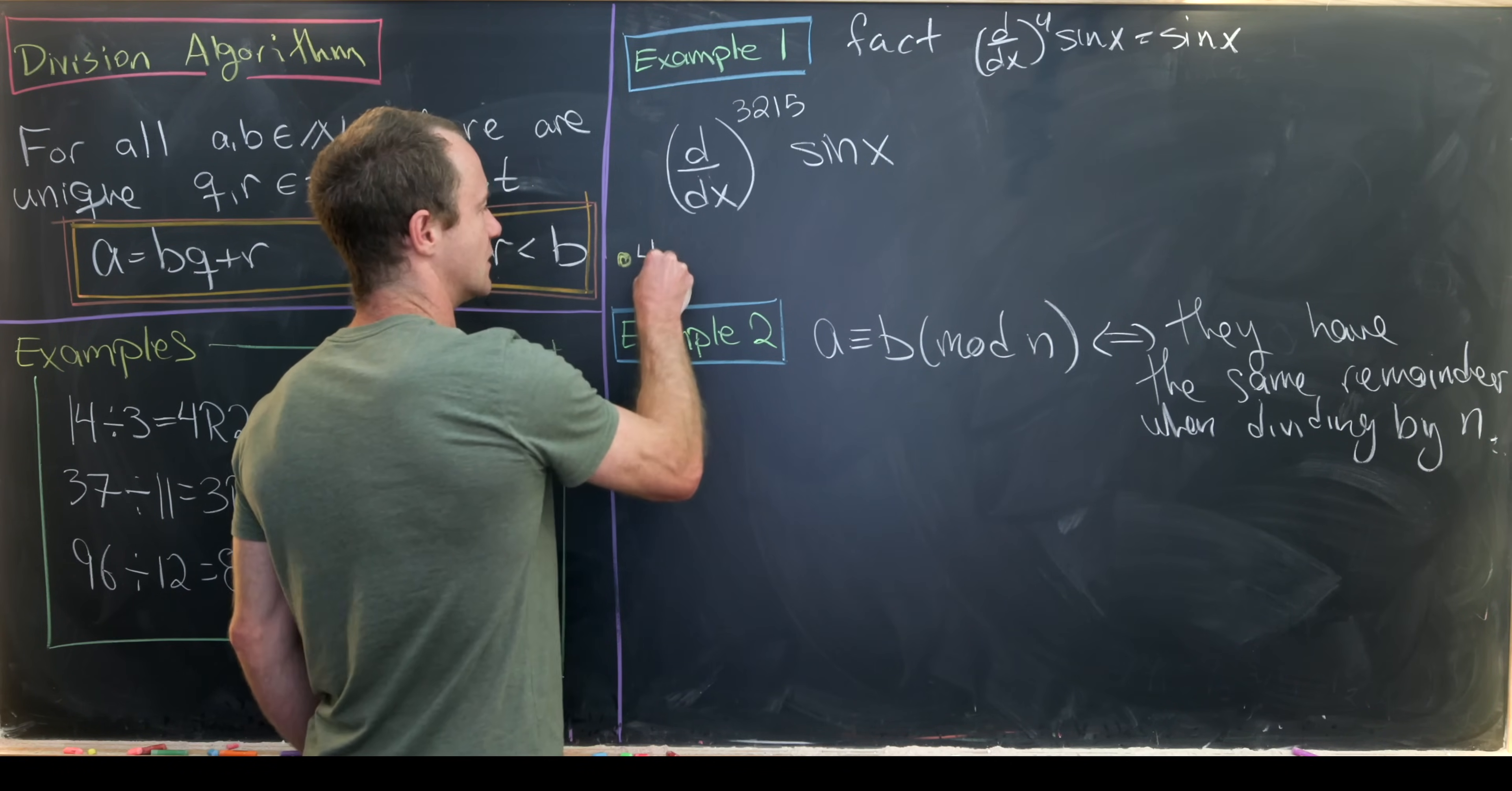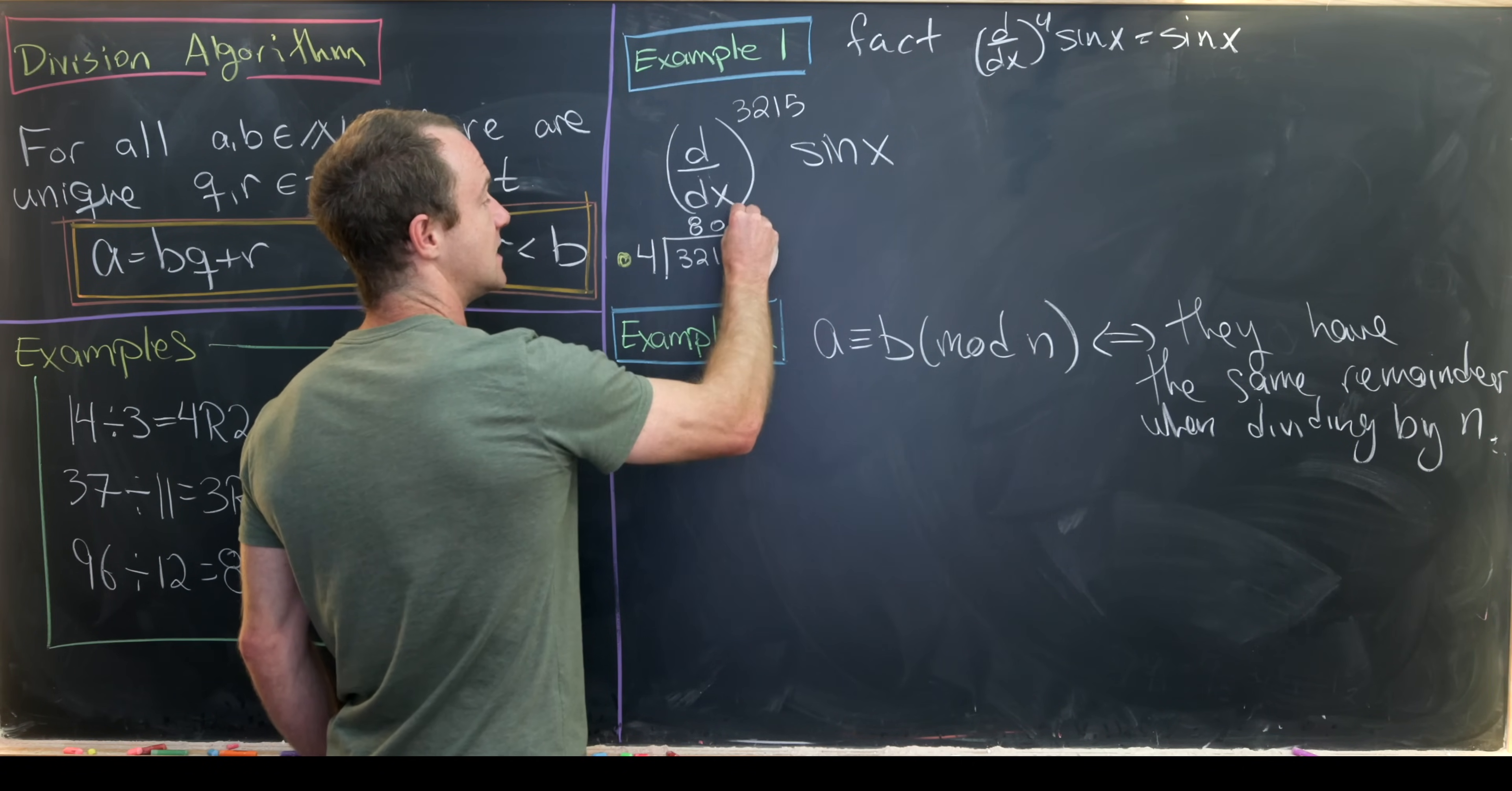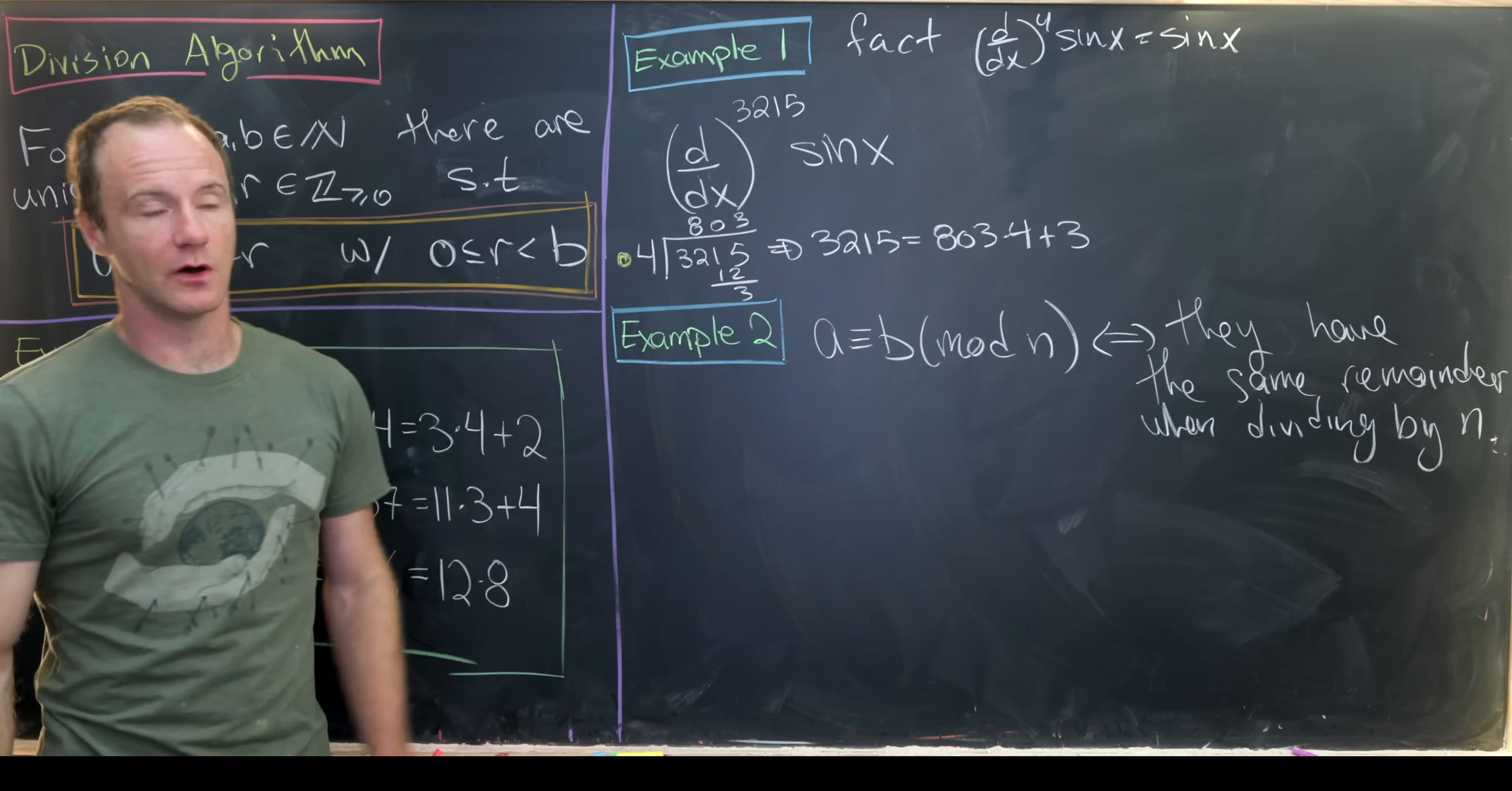And now we're going to take this number 3,215 and divide it by 4 and write it with quotient remainder. So let's do a quick grade school calculation here. 4 divides into 3,215—so it'll go into 32 eight times and it'll go into 15 three times. That's a 12 remainder 3. Okay, so that means that we can write 3,215 as 803 times 4 plus 3. Okay, great.